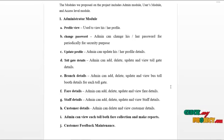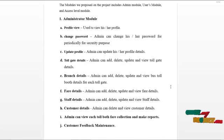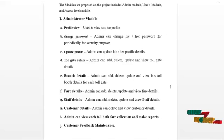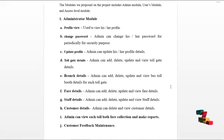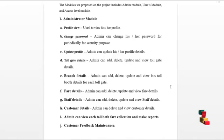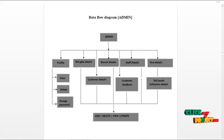Admin can view user details and delete users registered with the system. Admin can view each tollgate fare corrections and generate reports yearly or monthly. Admin can view feedback from users and reply to that feedback. Admin's main service also includes communicating with staff and customers. The data flow diagram for the admin is as follows.